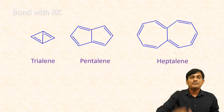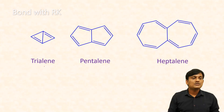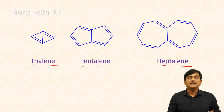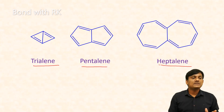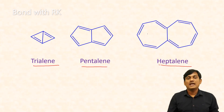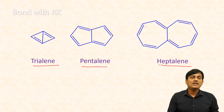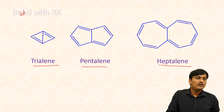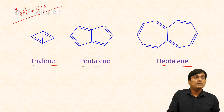Let us take other azulenes: triazulene, pentazulene, and heptazulene. In each case there is a fusion of two rings. In the case of triazulene, you can find two three-membered rings; pentazulene has two five-membered rings; heptazulene has two seven-membered rings. In azulenes, you can find rings with an odd number of carbons — there is a fusion of rings with an odd number of carbons.